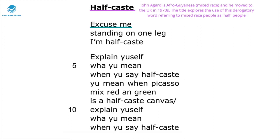The first stanza is just a tercet — a three-line stanza — and initially the speaker begins by stating 'excuse me.' This shows that the whole poem is written as a dramatic monologue, shown through the use of enjambment throughout the poem, which speeds up the pace.